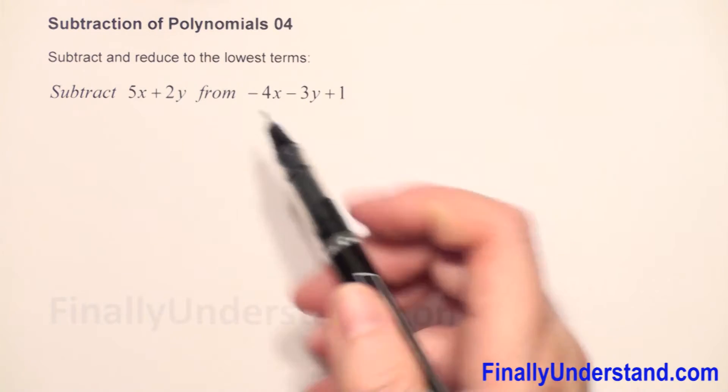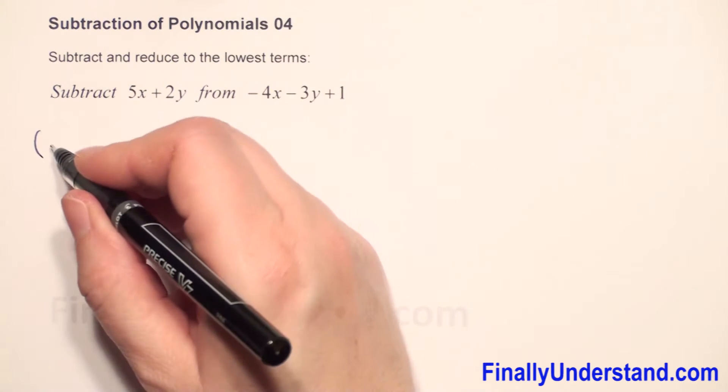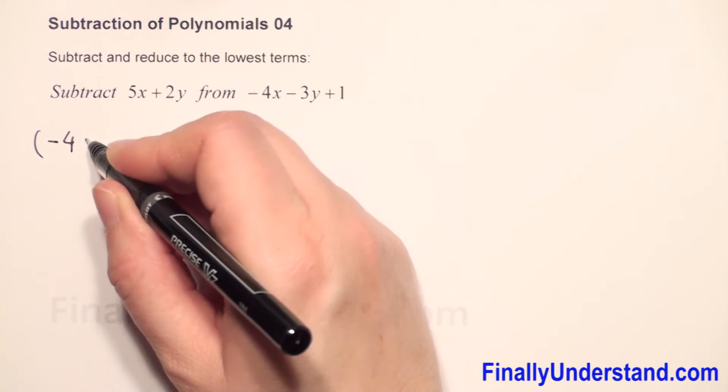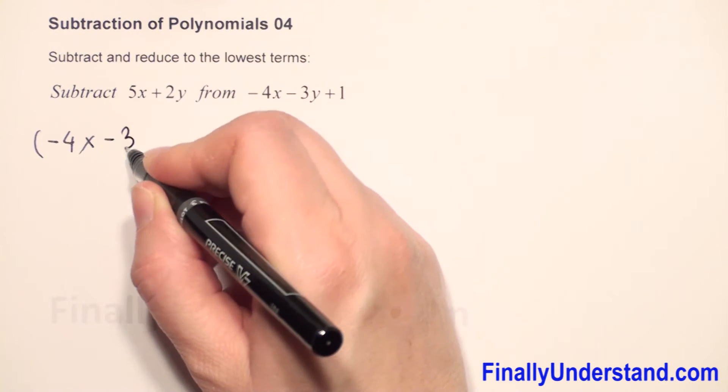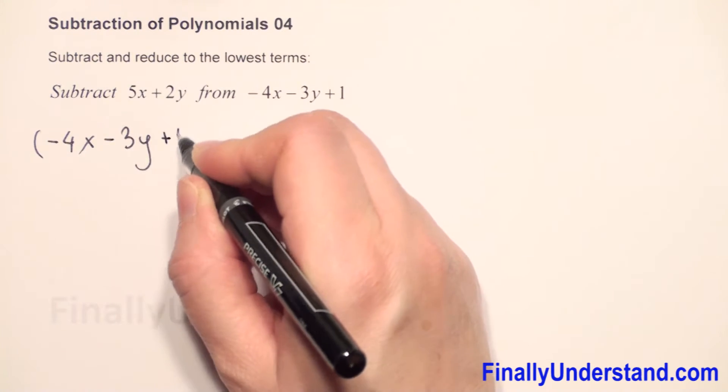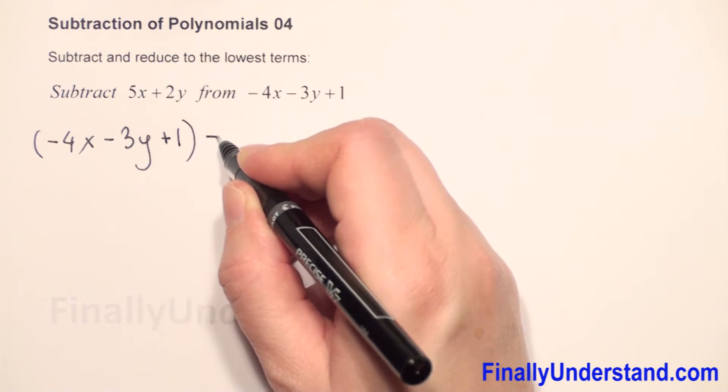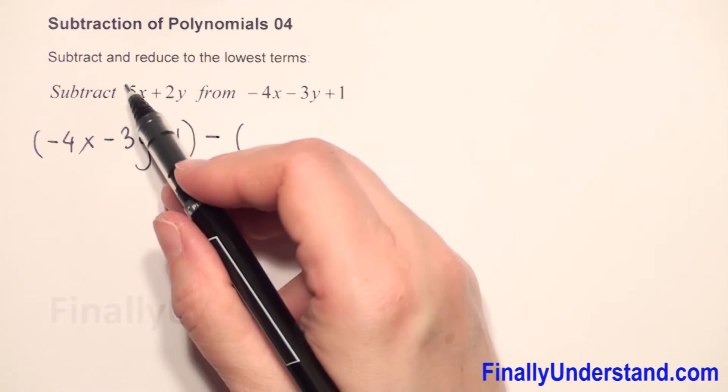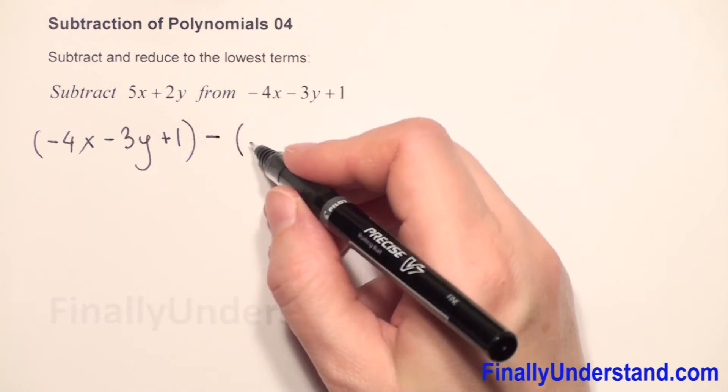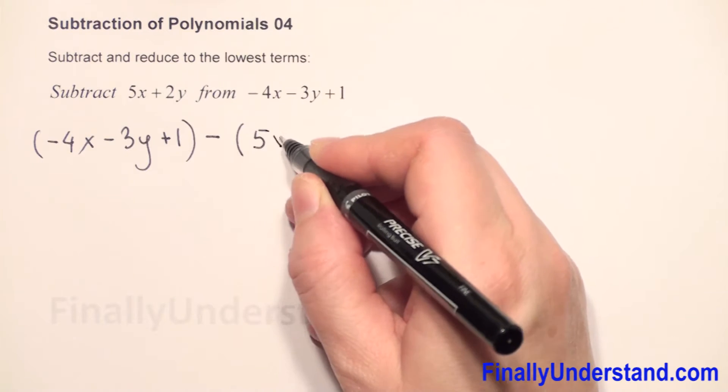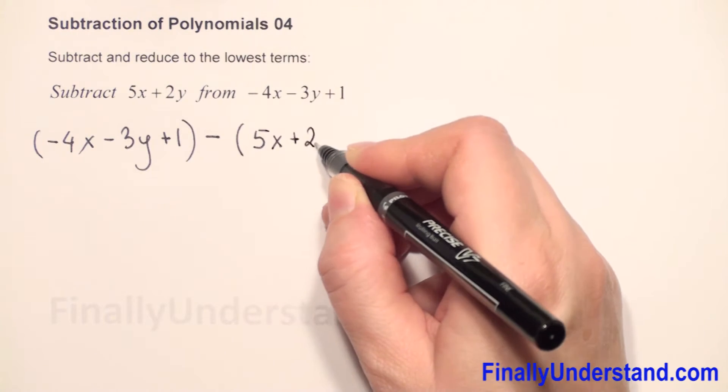Let me put this whole polynomial in parentheses. We have negative 4x minus 3y plus 1, and minus, and this whole expression we will put in parentheses: 5x plus 2y.